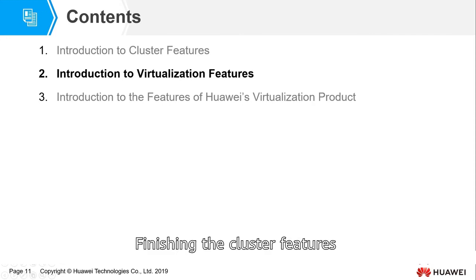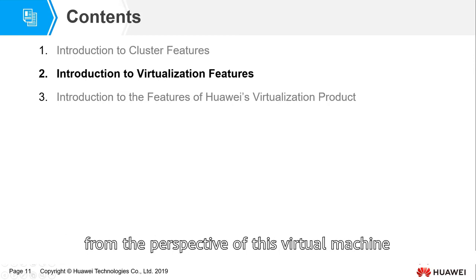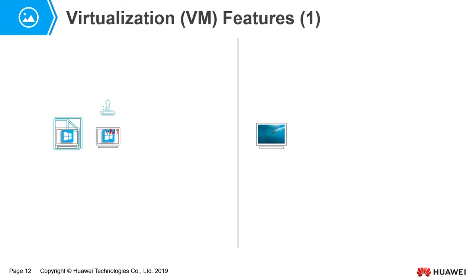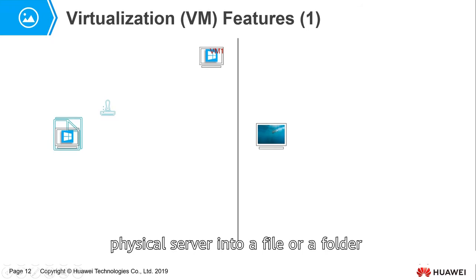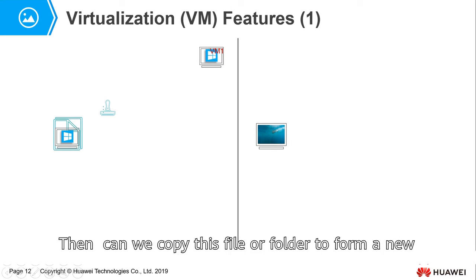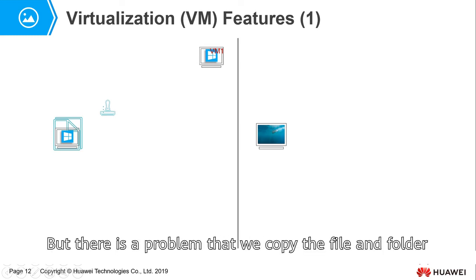Finishing the cluster features, let's look at the characteristics of virtualization from the perspective of the virtual machine. The essence of virtualization is that a physical server is logicalized into a file or a folder, and each file or folder corresponds to a virtual machine. Can we copy this file or folder to form a new virtual machine? Yes, it can be done. But there is a problem when we copy the file and folder.